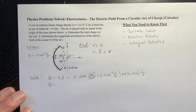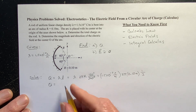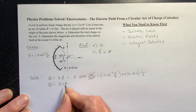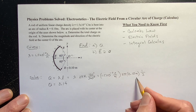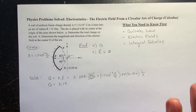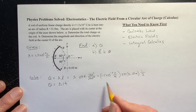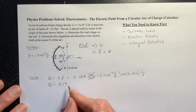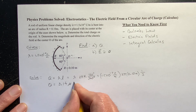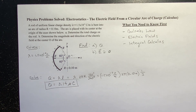Let's plug in some values. Lambda is 1.5 times 10 to the negative 5 coulombs per meter, times 2 pi times the radius 0.10 meters, times one third. If you plug all that into your calculator, you should get 3.14 times 10 to the negative 6, which is 3.14 microcoulombs. That's my answer for part A.